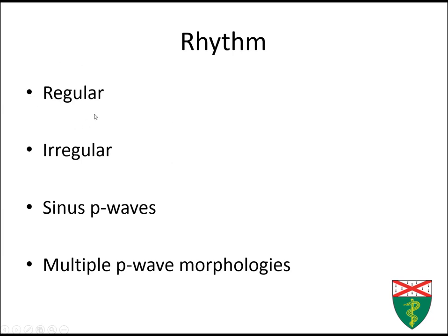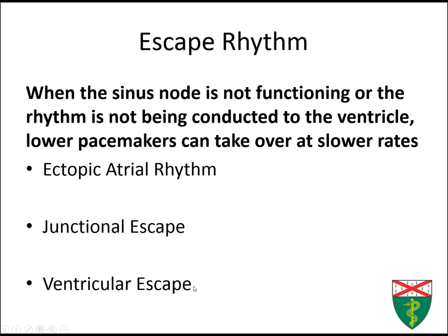To recap: you're asking if it's regular versus irregular, if there are sinus P-waves, and if there are other P-wave morphologies. When the sinus node is not functioning or rhythm is not conducted to the ventricle, you can see escape rhythms. An ectopic atrial rhythm has P-waves but they're not sinus P-waves. A junctional escape comes from the AV node and will usually be a narrow complex. A ventricular escape comes from the ventricles and will be a wide complex.